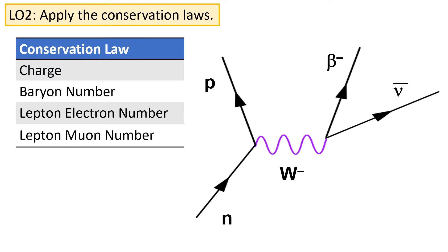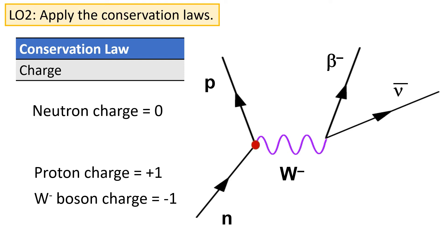The first four of these need to be conserved in every interaction. Let's consider beta decay. At each of the junctions in beta decay, all of these conservation laws need to apply — that is, before and after the junction, each of these quantities needs to be conserved. Before the junction we have a neutron, which has a charge of zero. After that junction we must therefore also have a charge of zero, and indeed we do, because the proton has a charge of plus one whereas the W minus boson has a charge of minus one. So overall, after the junction, the charge is still zero.